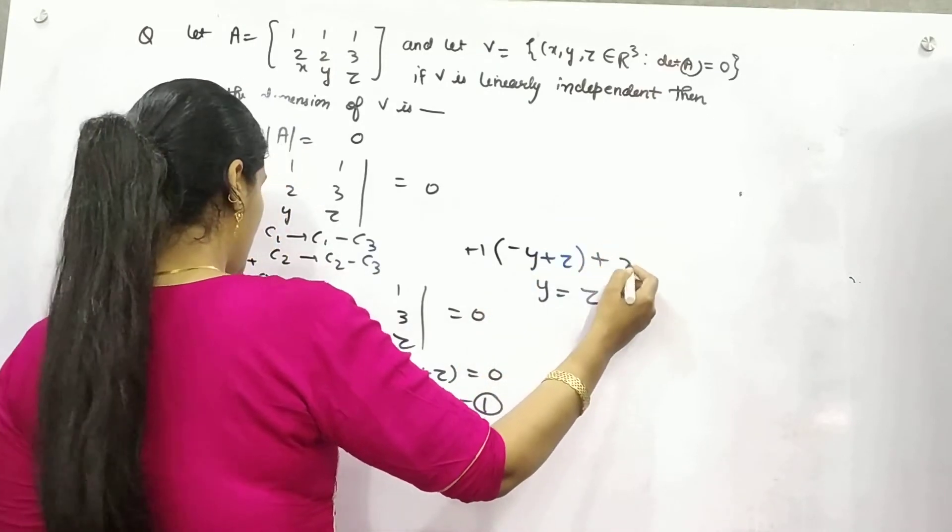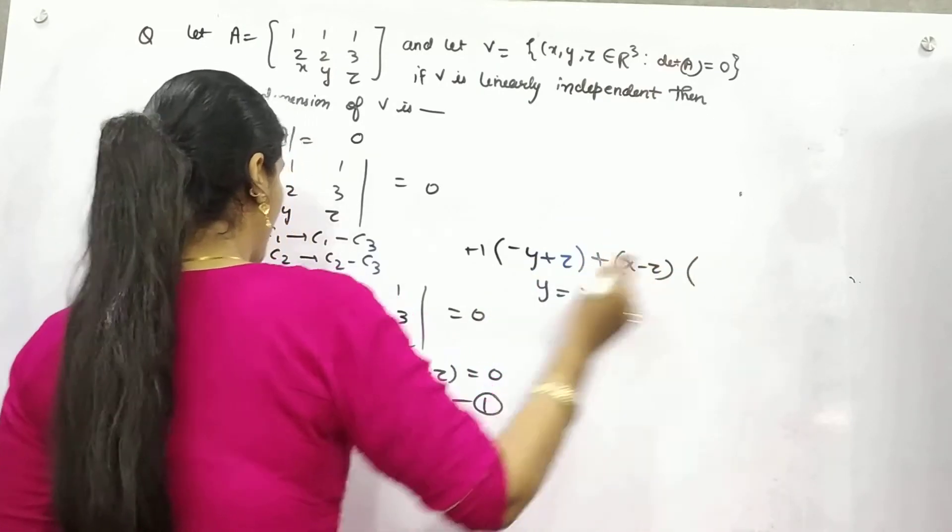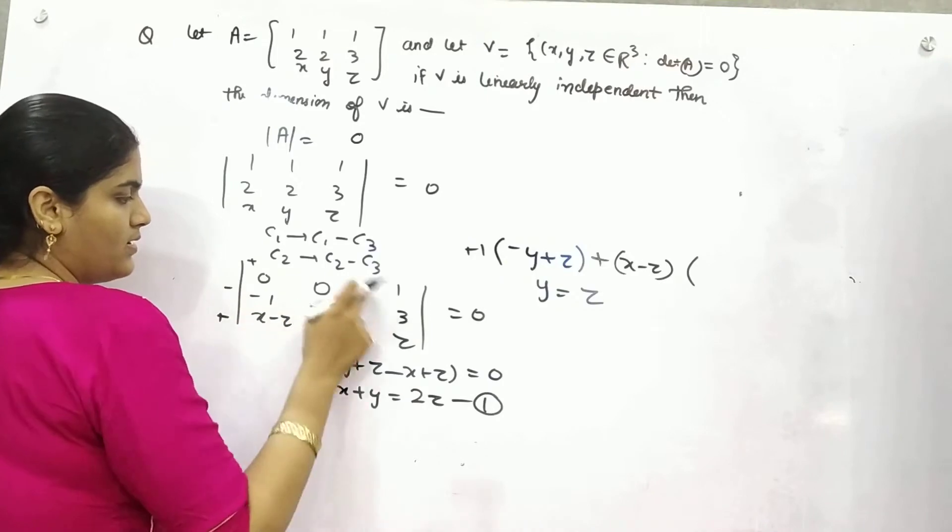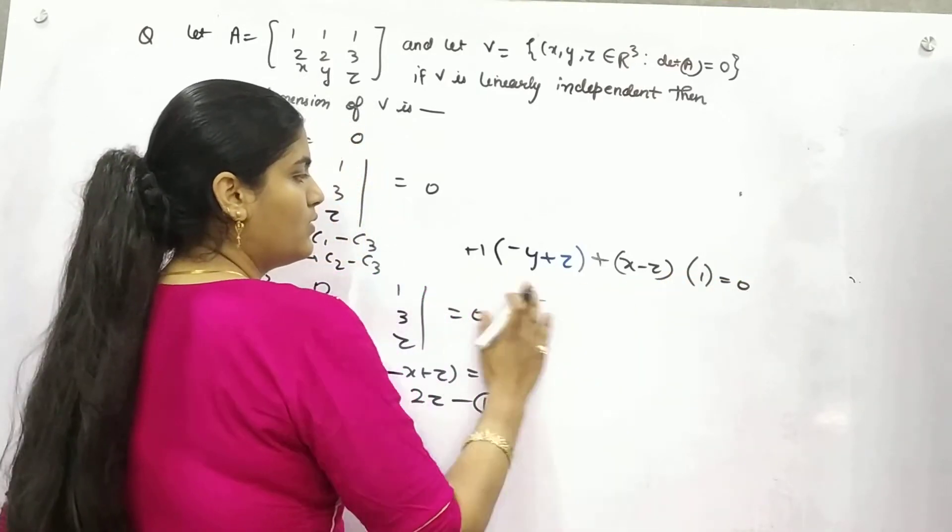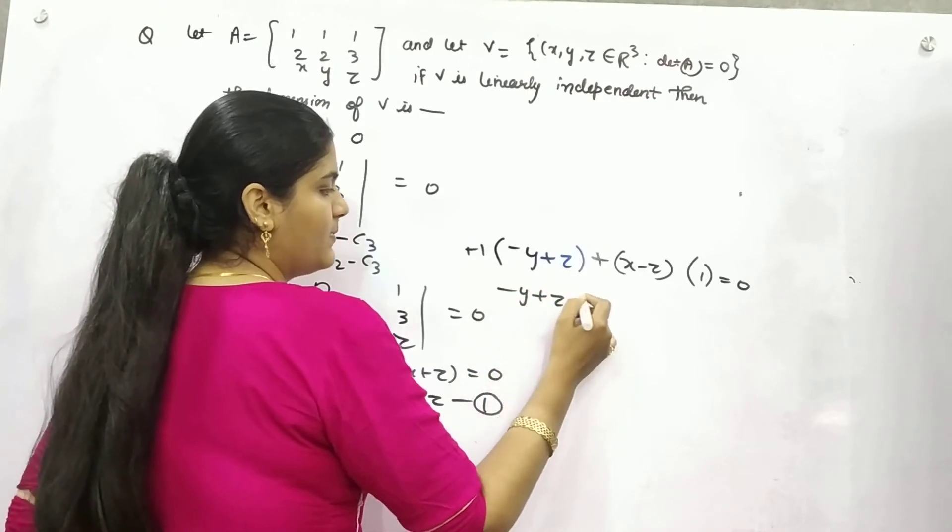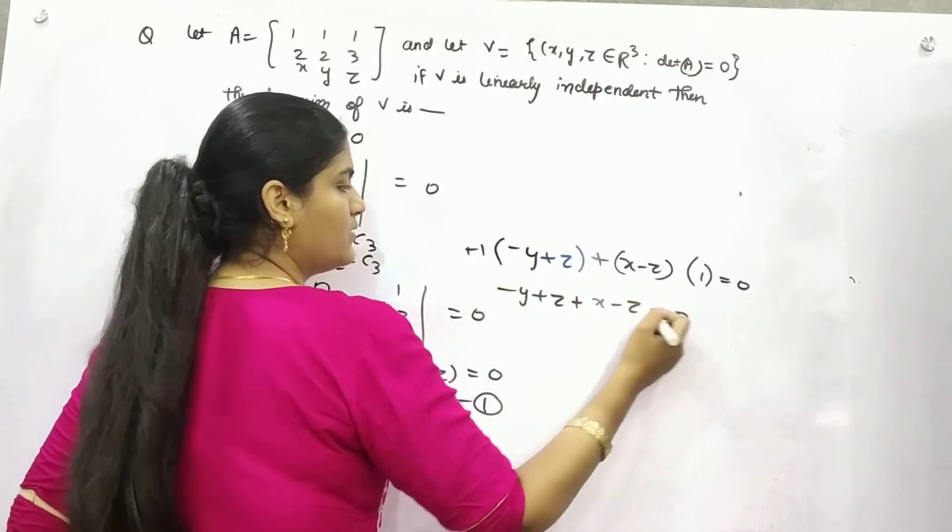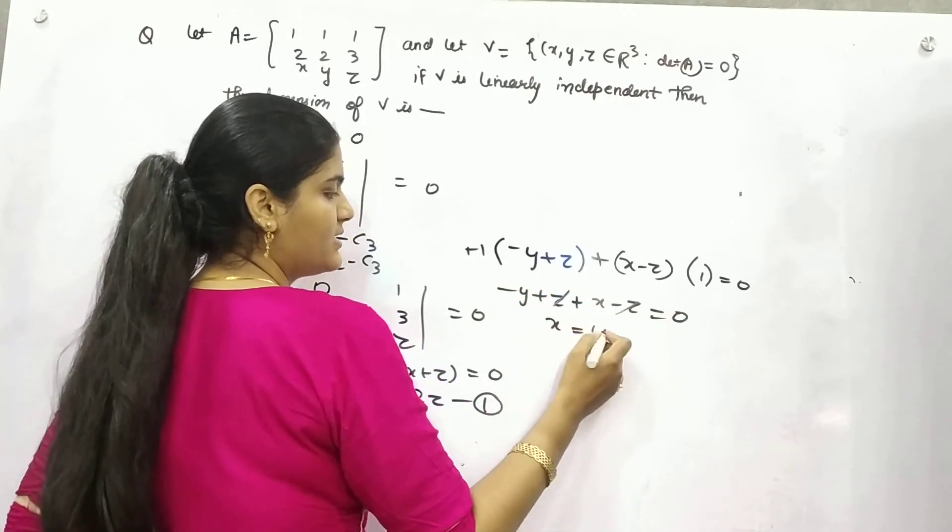And what else? Oh, this is left, x minus z. What's for this? Minus minus plus 1. So minus y plus z plus x minus z equals zero. Z is cancelled with z, so x equals y.